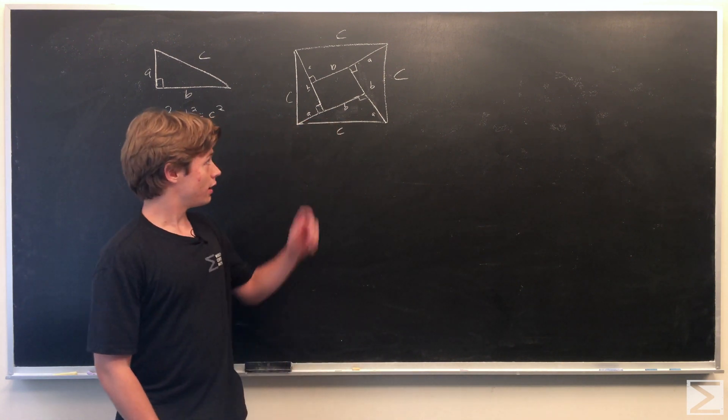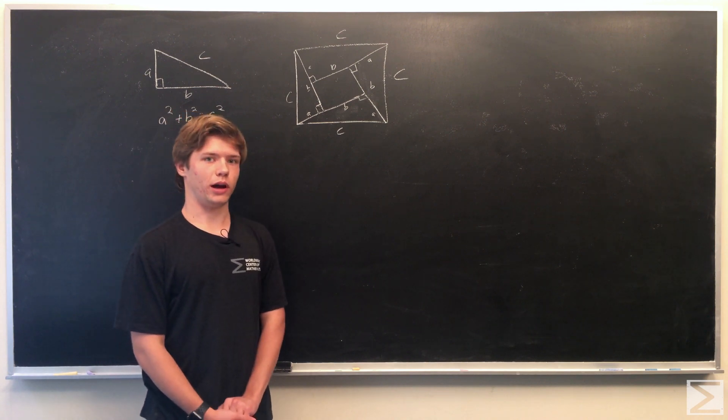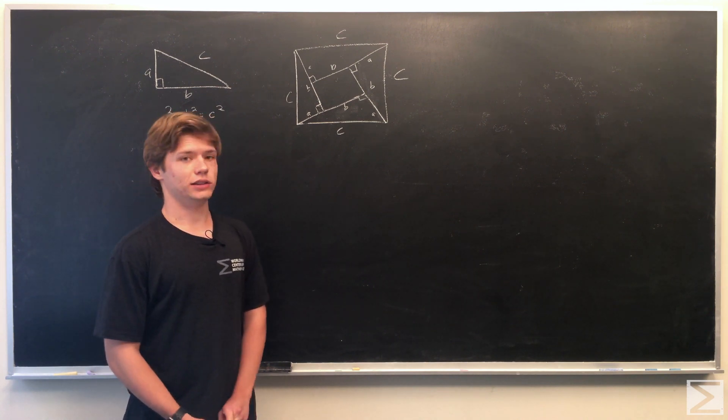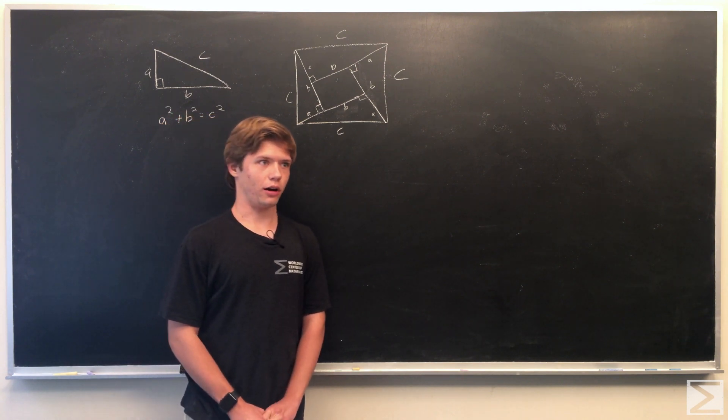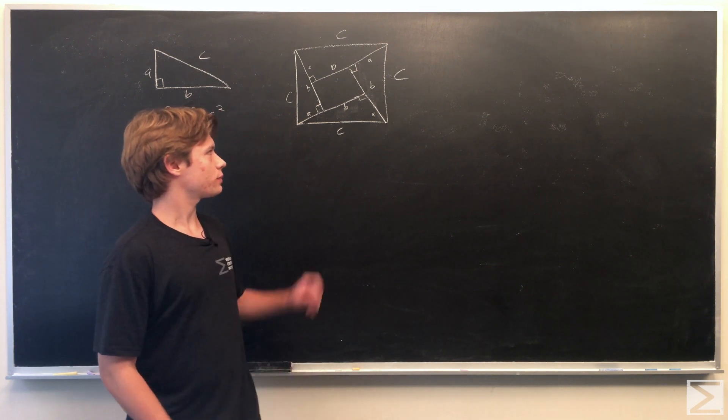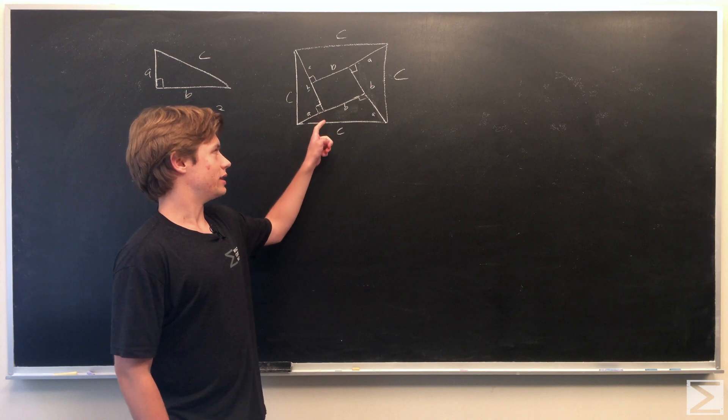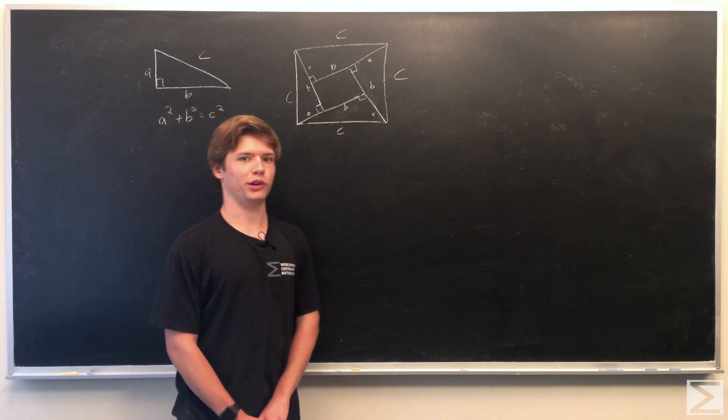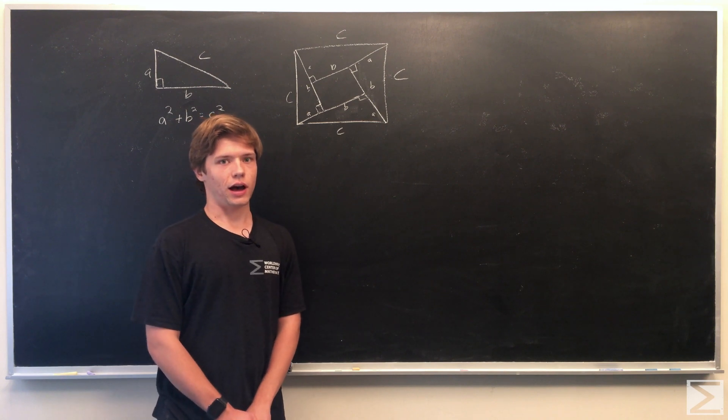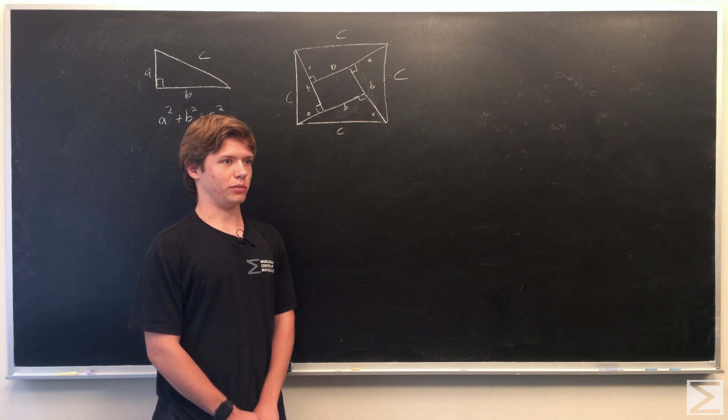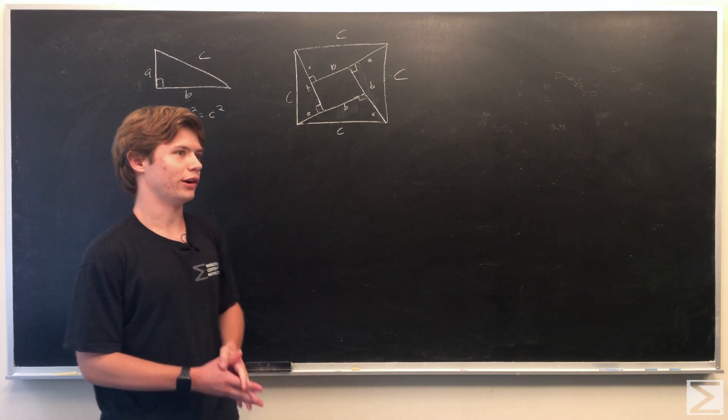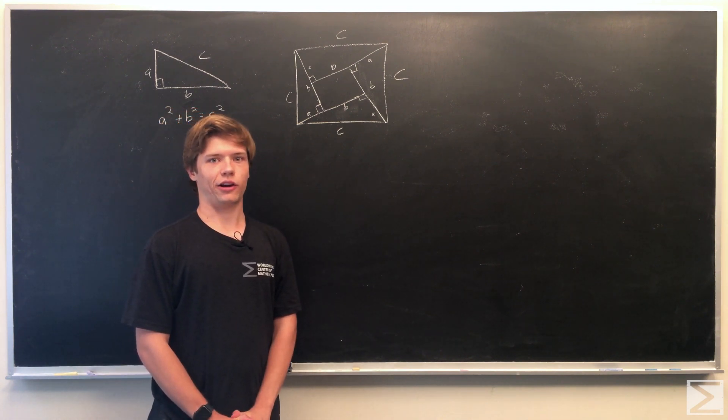So we have here is a square with side c and inscribed into the square are four right triangles with sides or legs a and b. So what we're going to do now is prove that a squared plus b squared is equal to c squared using just this square. We're going to do that by finding the area of the square.